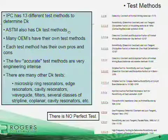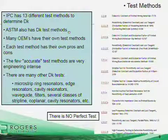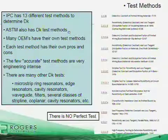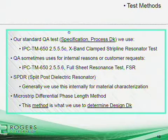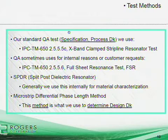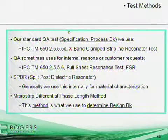At Rogers we use some IPC test methods, as do I think all laminate suppliers. For the IPC group of test methods, there are about 13 different ways you can test a laminate for dielectric constant. Each test method has its own pros and cons. ASTM has test methods, OEMs have their own, universities have their own — so there's no shortage of test methods, and the bottom line is there is no perfect test method to determine the dielectric constant of a laminate. The four I'm going to discuss are the four most commonly used.